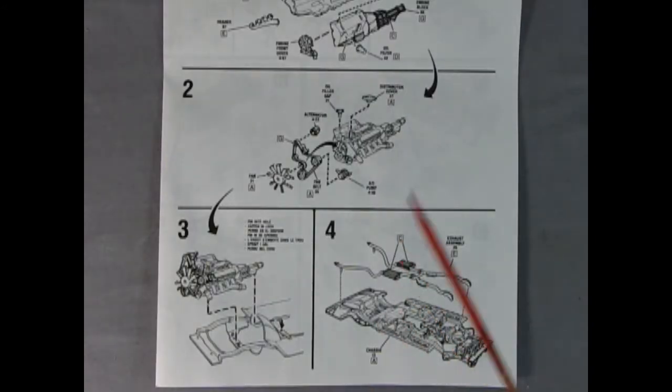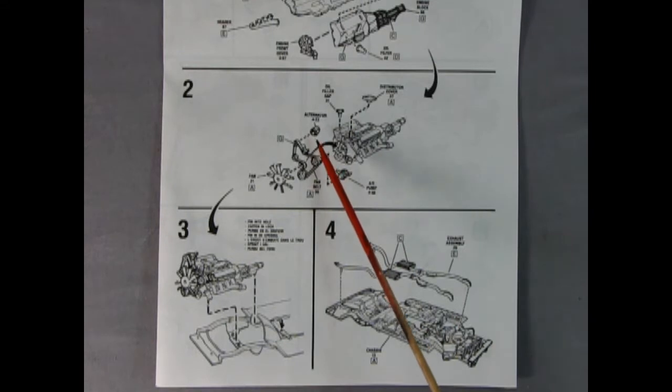Our engine build continues in panel two where you put on the distributor cover, the oil filler cap, alternator, fan belt, pulley assembly, AC pump, and our fan. Then you drop that into the chassis and then you attach up our exhaust manifold system.